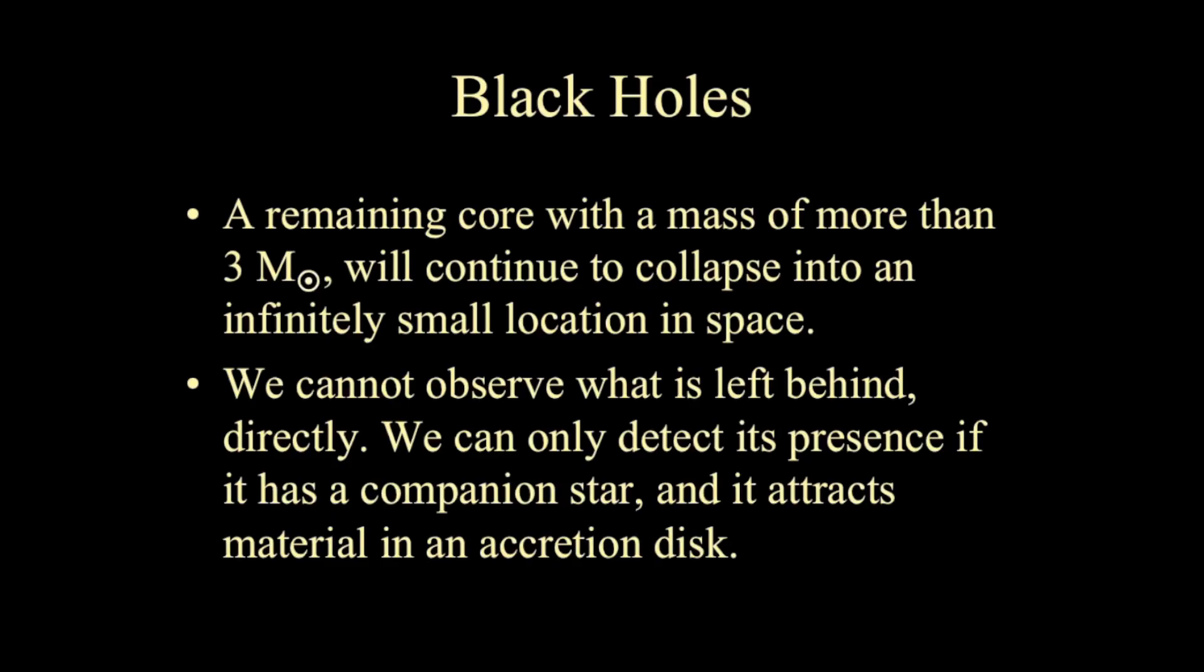Now, black holes are what remains when the core of the most massive stars collapse down during the type 2 supernova event. What happens is that that iron core collapses down to such a small location, in fact an infinitely small location in space with extremely high density and extremely high gravity. What's left behind cannot be observed directly because any light that might be coming off of it is just directed back inward onto the object.